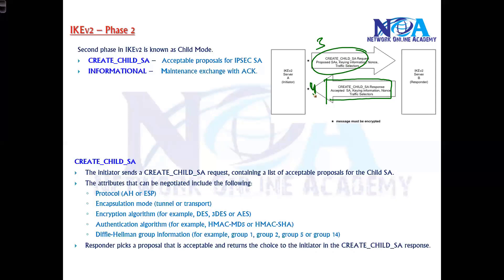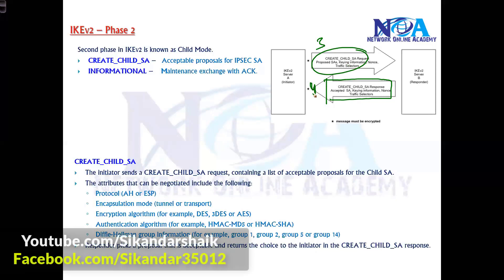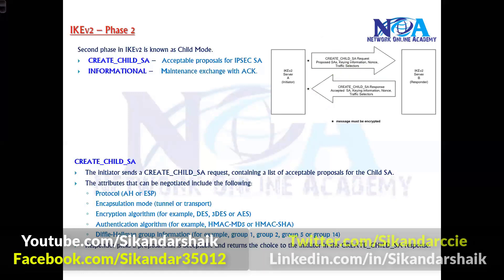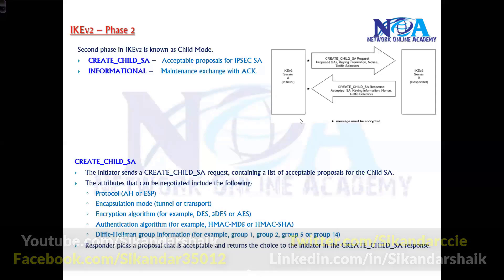To summarize: Phase 2 messages are not separate — they are actually combined in messages 3 and 4. I have separated this as a distinct phase only to make it easier to understand, similar to IKEv1. The messages are combined into 4 total, which makes IKEv2 much faster than IKEv1. It also has security enhancements, making it a better version compared to IKEv1.